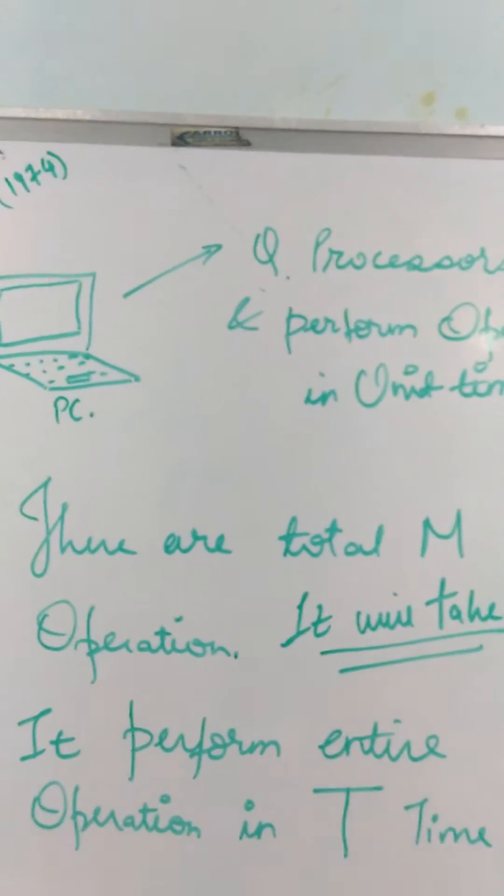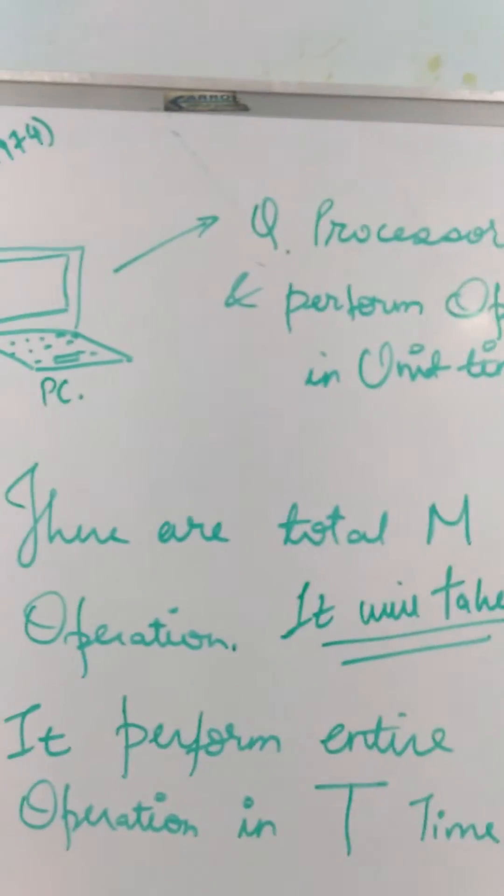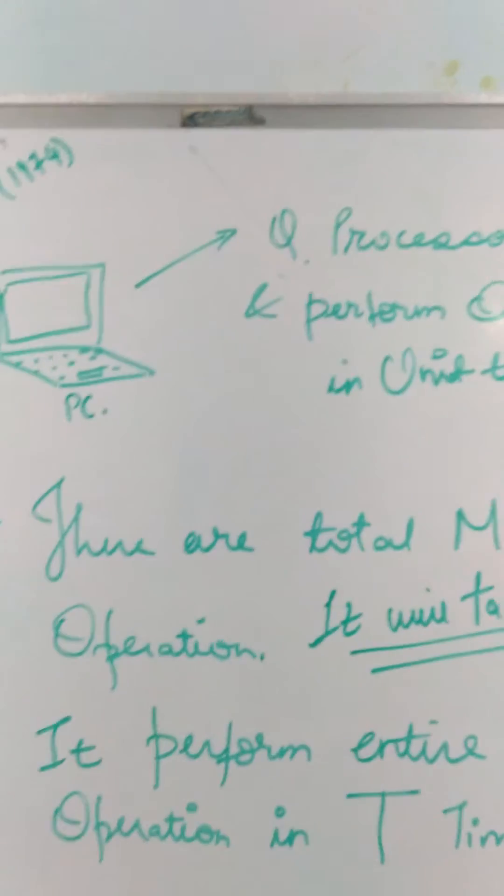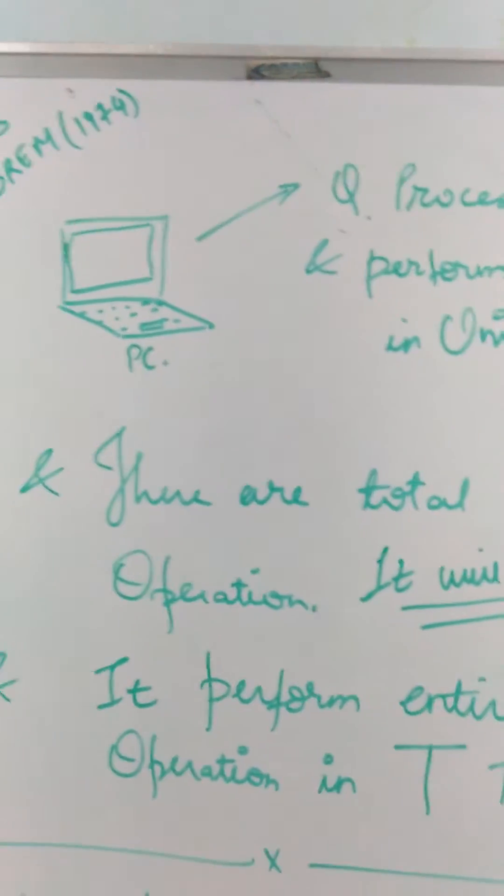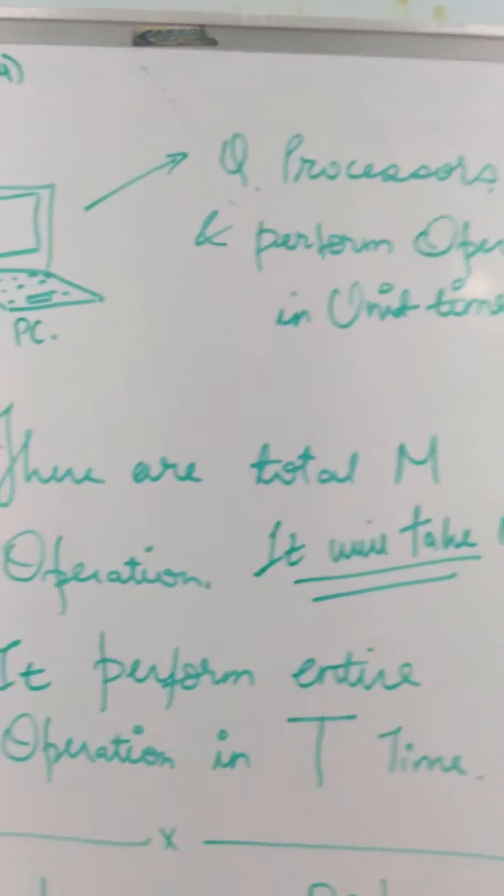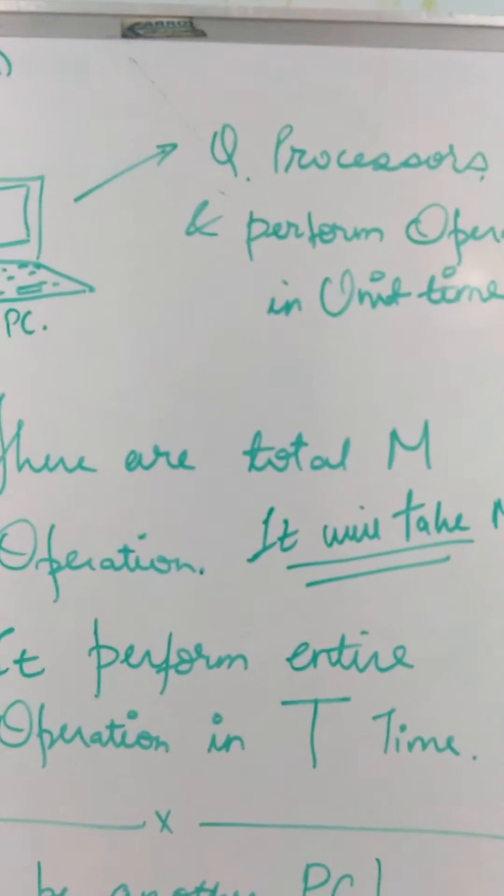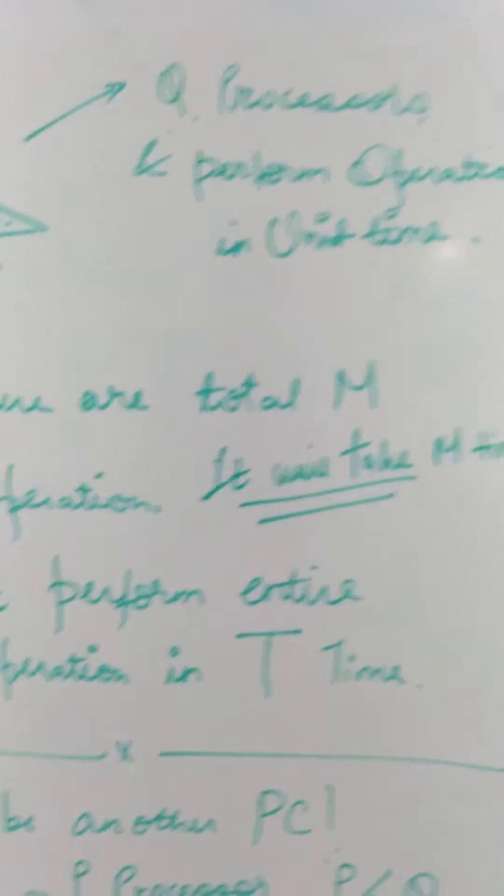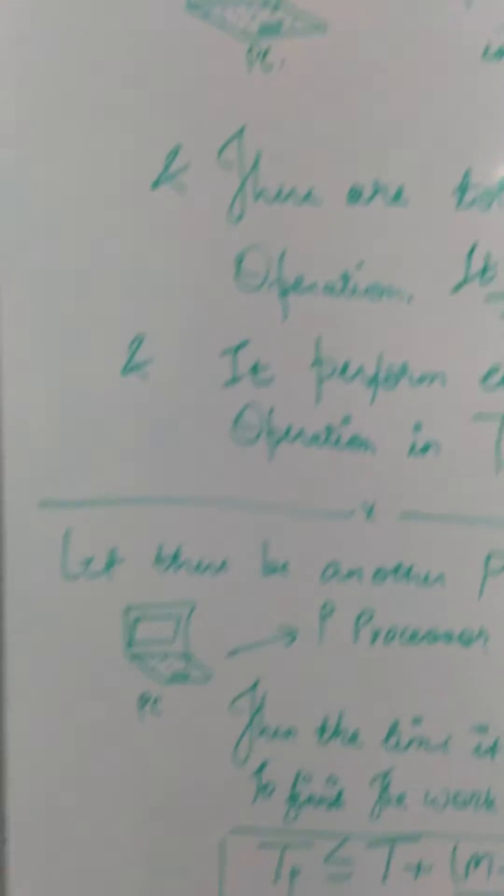These processors are enough for achieving maximum concurrency. Let there be M operations. If there are M operations, then it will take M time. So let the time be T. And let there be another PC.